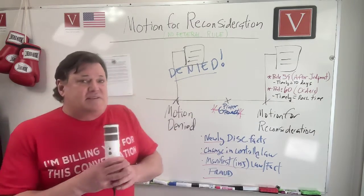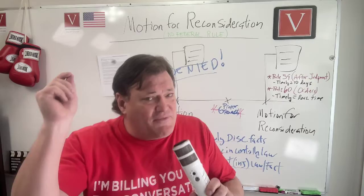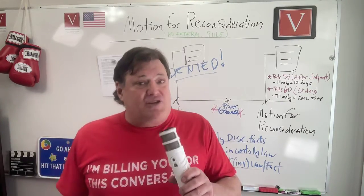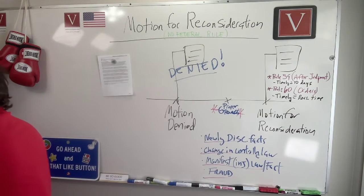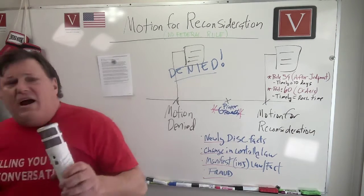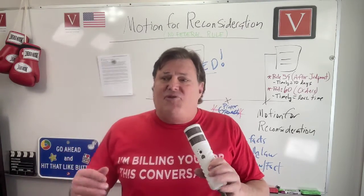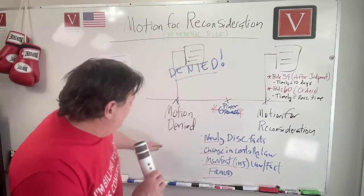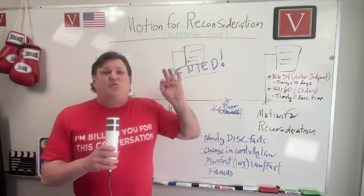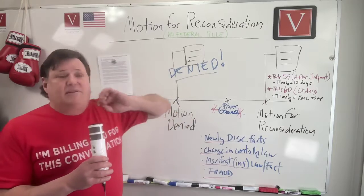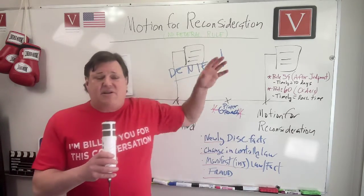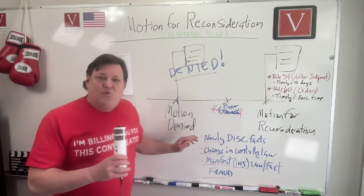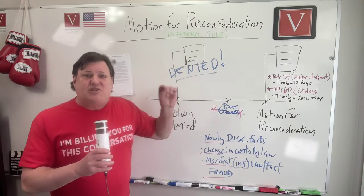You need something that was so obviously wrong that it needs to be changed — manifest injustice. Alexa, please define manifest. As an adjective, manifest is defined as readily perceived by the eye or the understanding: evident, obvious, apparent. Obvious, apparent — that's what you're looking for. If you're thinking, 'Well, the judge just didn't buy my argument,' it's not going to work. You need something like newly discovered facts — things that you could not find and could not present at the time. It should be something significant, not trivial like the moon was half full that day.